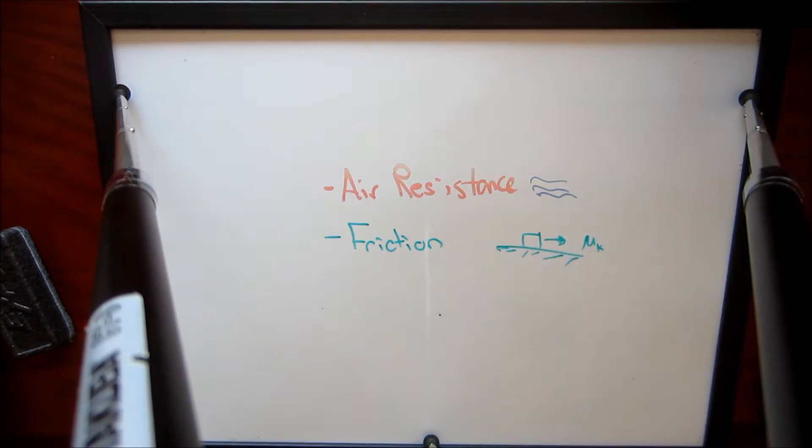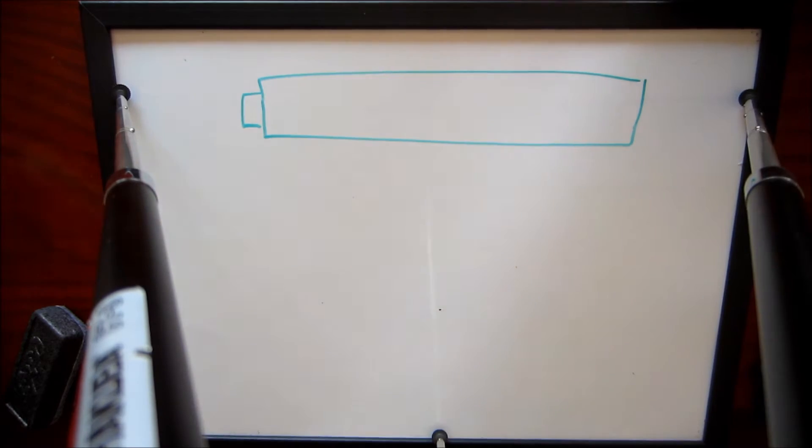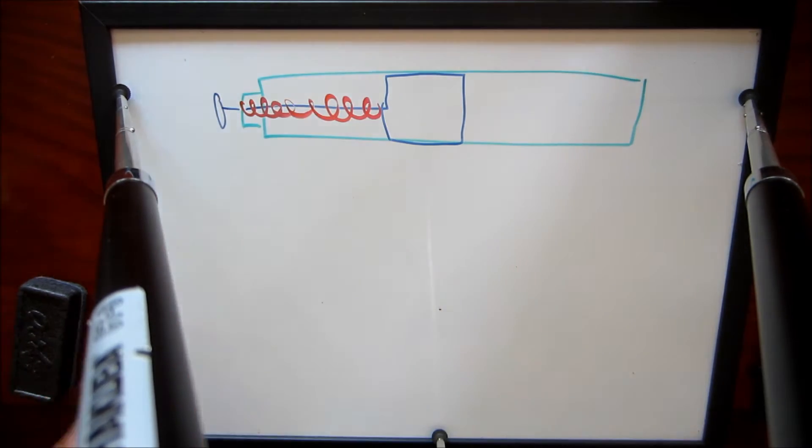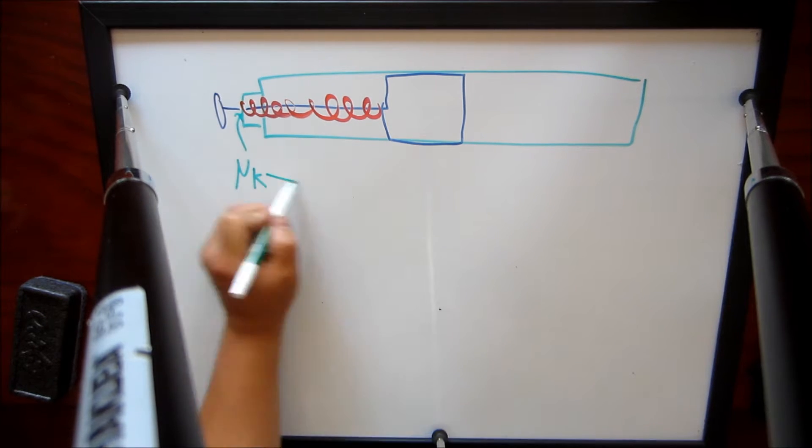These forces slow down the velocity of the ball. The parts of the spring cannon that have friction forces are located at the head of the spring and between the rod and the end cap of the tube.